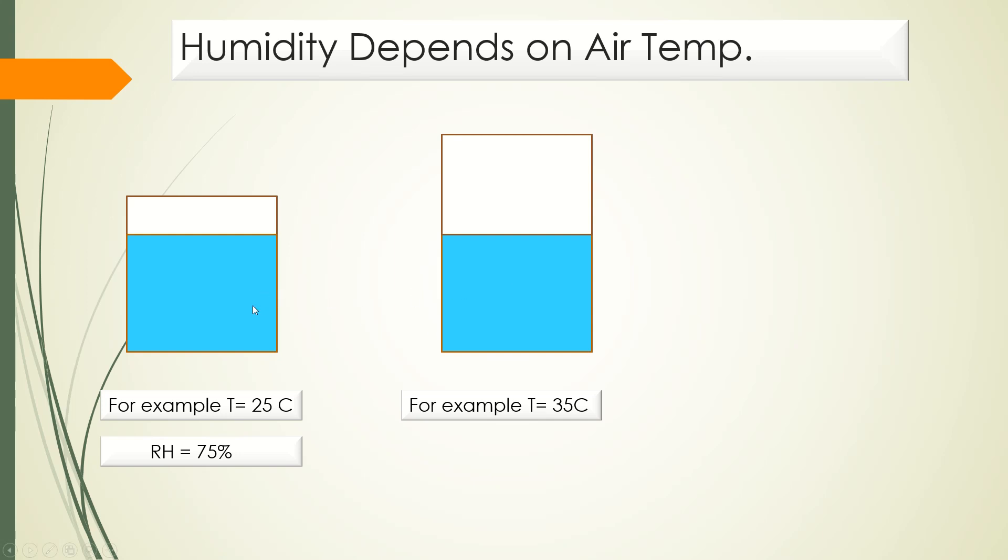So with the same water level, the humidity will reduce. We can say that if the dry bulb temperature or ambient temperature increases, then the humidity will decrease.